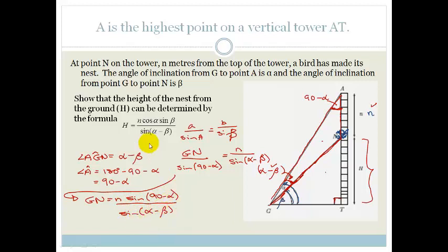Now at this point, I go and check to see how I'm doing compared to what I want. I've got sine of alpha minus beta. Awesome. I've got N at the top. Awesome. But they've got cos alpha, and now I've got sine of 90 minus alpha.